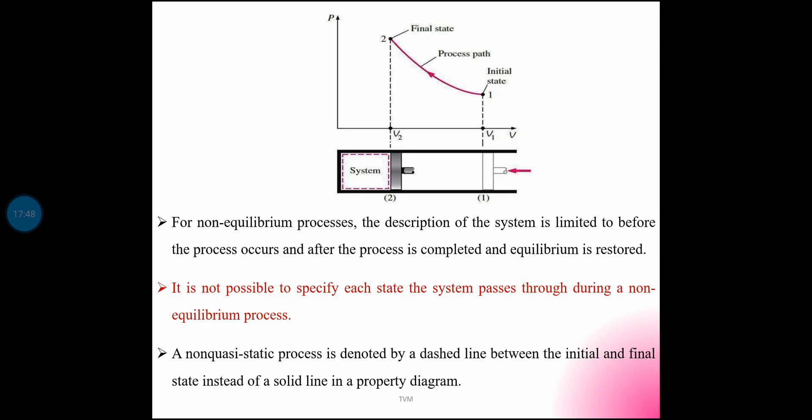For non-equilibrium processes, the description of the system is limited to before the process occurs and after the process is completed and equilibrium is restored. It is not possible to specify each state the system passes through during a non-equilibrium process.